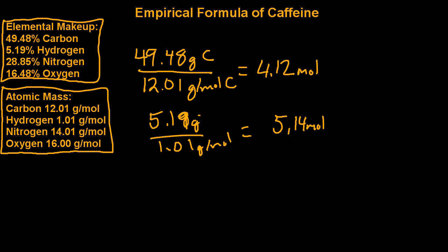And for nitrogen, 28.85 divided by 14.01 is equal to 2.06.